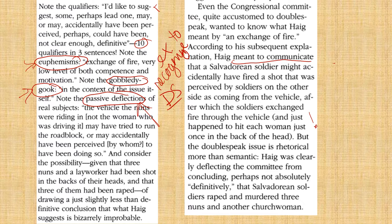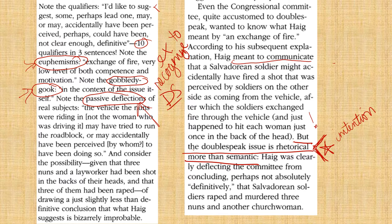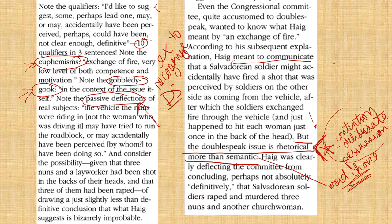But the doublespeak issue is rhetorical more than semantic — this is an important thing to note here, maybe something that is quote-worthy. I usually mark things that I think I'll want to quote. Saying that doublespeak is rhetorical more than semantical has to do with intention — that it's a deliberate persuasion more so than it is just a matter of word choice. So it's not just the words being used, but the way they're put together rhetorically to create an effect. That's a really important quote — this one I'll want to quote. Haig was clearly deflecting the committee from concluding that Salvadorian soldiers raped and murdered three nuns and another church woman.